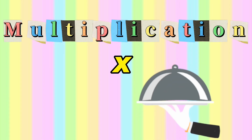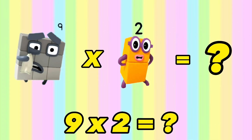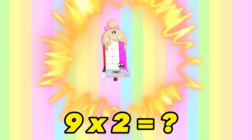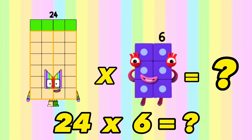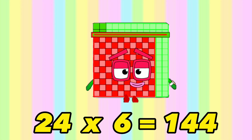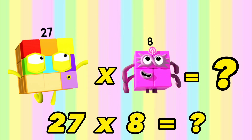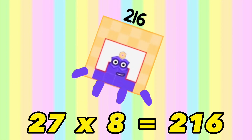Let's learn multiplication. 9 times 2 is equals to 18. 24 times 6 is equals to 144. 27 times 8 is equals to 216.